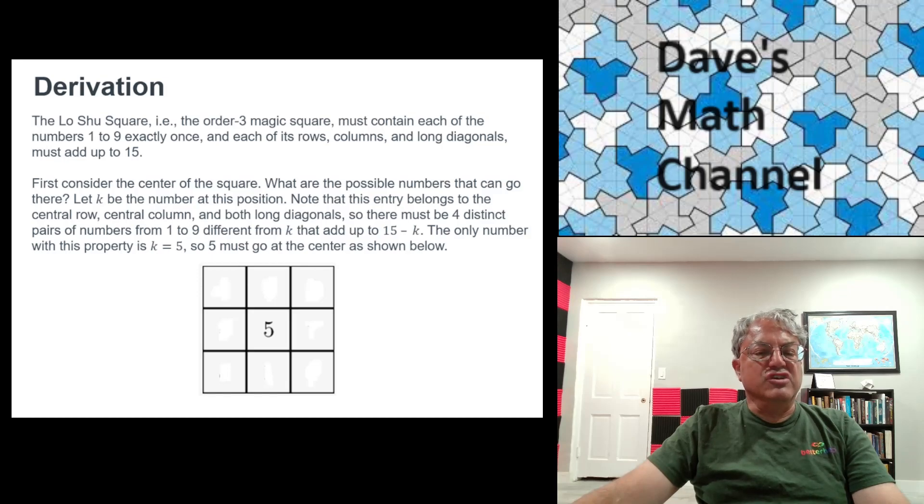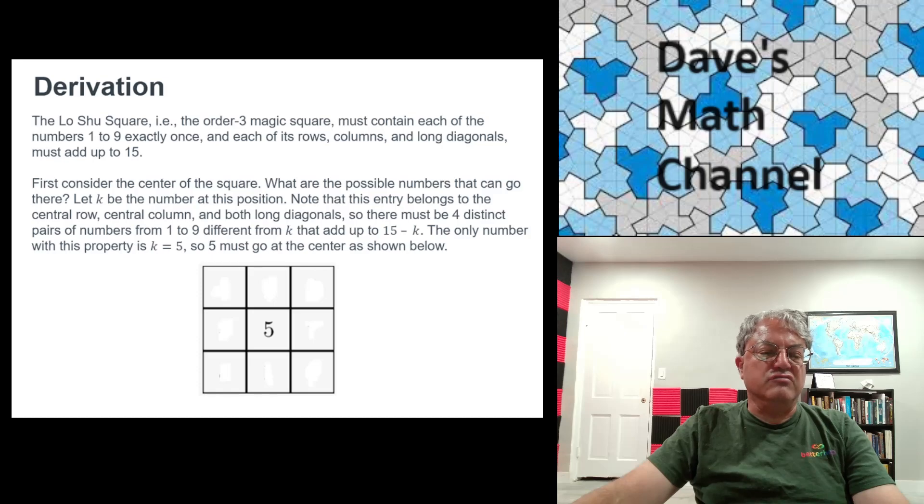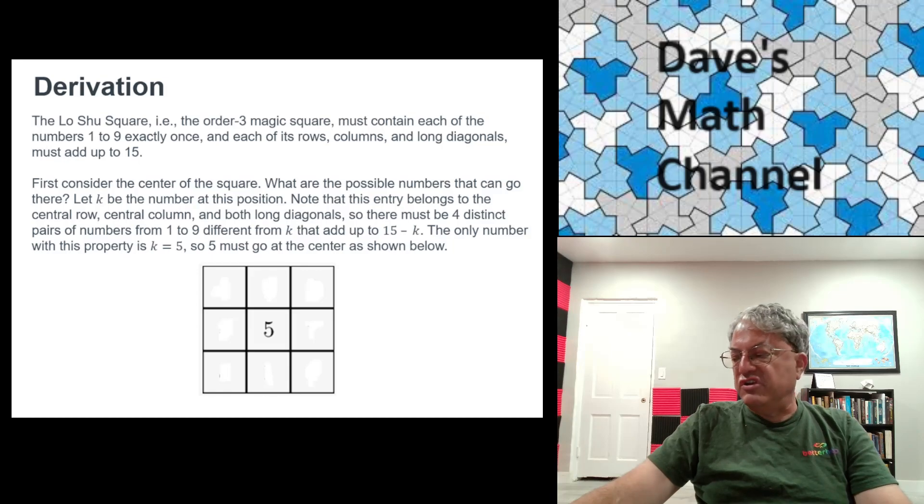And because of that, the only place 5 can be is in the center of the square. Because notice that the 5 in the center, the center position of the square is the only position in the square that belongs to exactly four lines that it has to belong to, namely two rows, two columns, and two long diagonals.